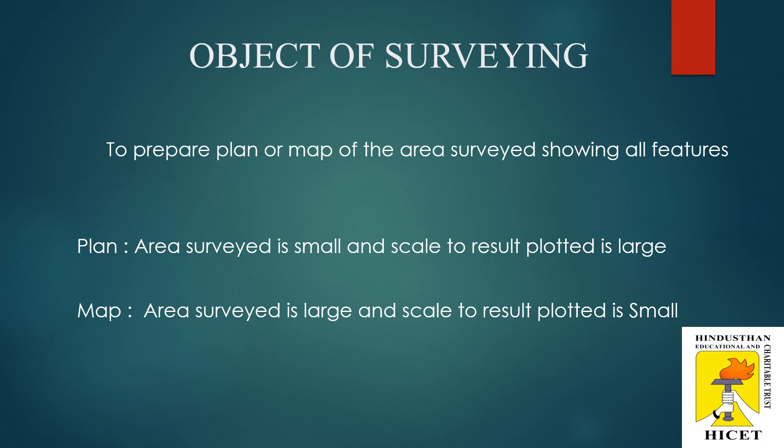The object of surveying is to prepare a plan or map of the area surveyed, showing all the features which already exist in the site or field. When the area is very small and the scale to which its result is plotted is large, then it is known as a plan. When the area surveyed is large and the scale to which its results are plotted is small, then it is known as a map. Preparing a map or plan is the ultimate aim or object of surveying.